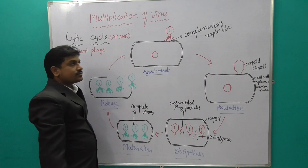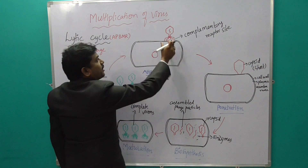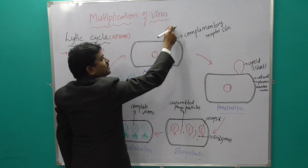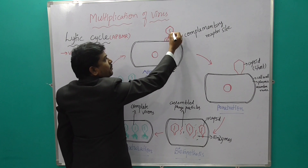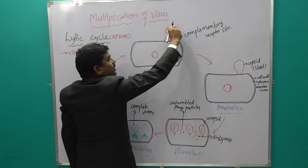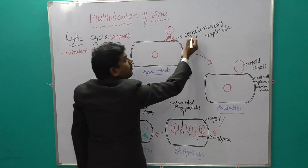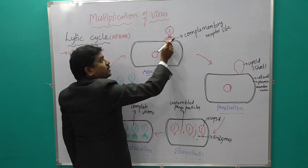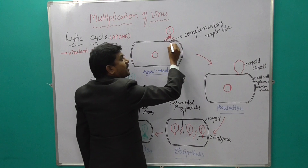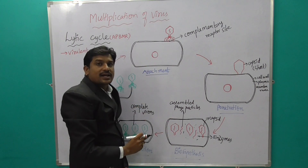The first stage is Attachment. The bacteriophage has a head and a tail. The bacteriophage attaches to E. coli bacteria using its tail fibers at complementary receptor sites on the bacterial surface. This process is called attachment.